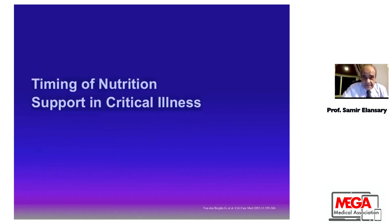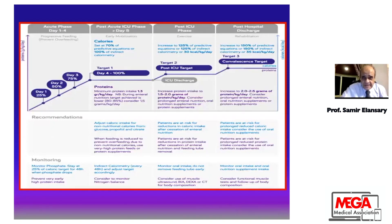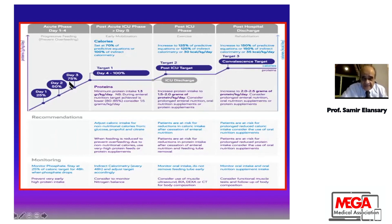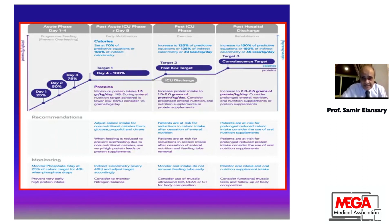The timing of nutrition support follows three stages. The ebb phase or hypovolemic phase persists for 24 to 48 hours. After that, the flow phase or catabolic phase starts around day three to four and persists for one to two weeks. Then the anabolic phase begins. During the early stages — days one, two, and three after ICU admission — we start gradual nutrition support: 25% on day one, 50% on day two, 75% on day three, reaching the full target by day four.